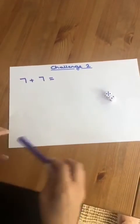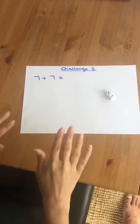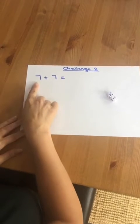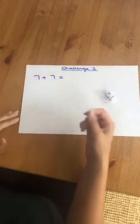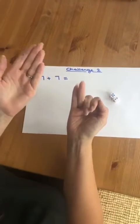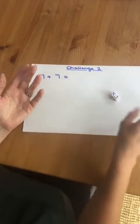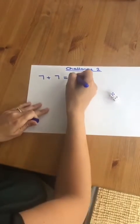Now to double seven, I know in Year One a lot of you like to put numbers in your head and count on. You could put the first seven in your head and add seven. Seven in your head, then add seven. Eight, nine, ten, eleven, twelve, thirteen, fourteen. Double seven is fourteen.